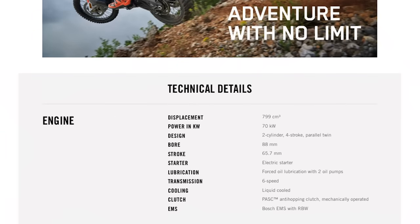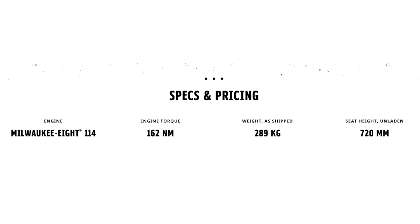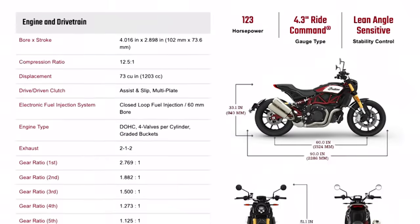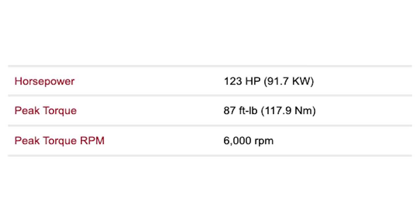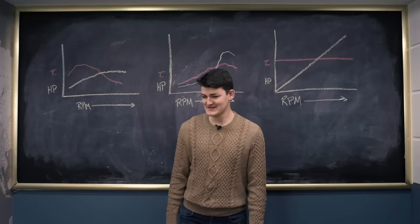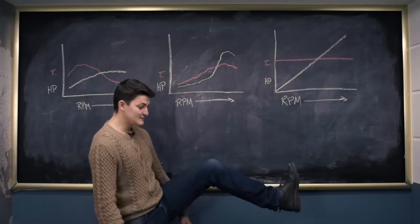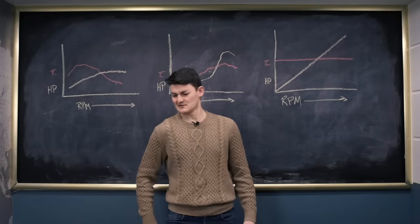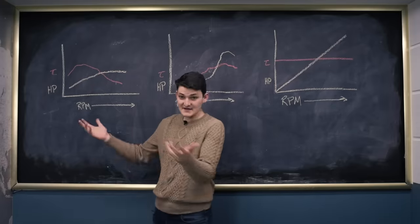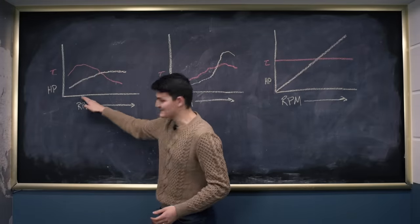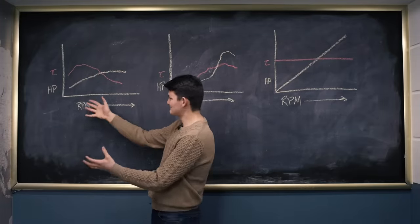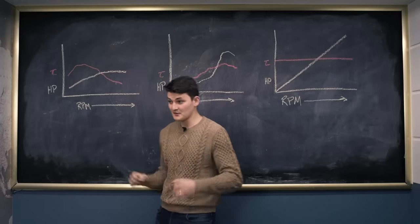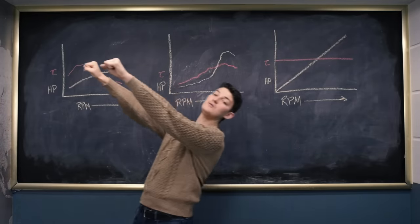Unfortunately, too many manufacturers quote peak figures with no rev speed attached. At best, they'll give one RPM snapshot. It's classic misdirection: showing your best foot to hide the whole ugly leg. Say I make 100 foot-pounds—it sounds great. But if it all comes at 2,000 RPM, that's like 38 horsepower. It'll rip my arms off at idle, but it won't hold me there.